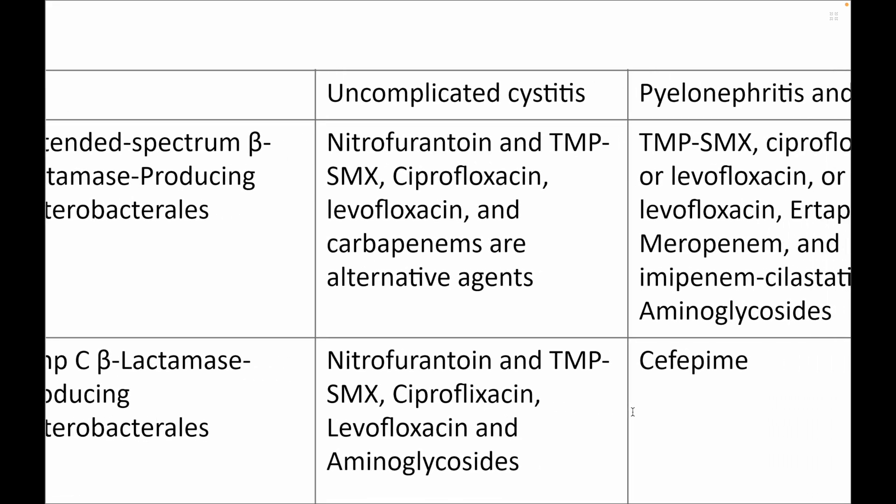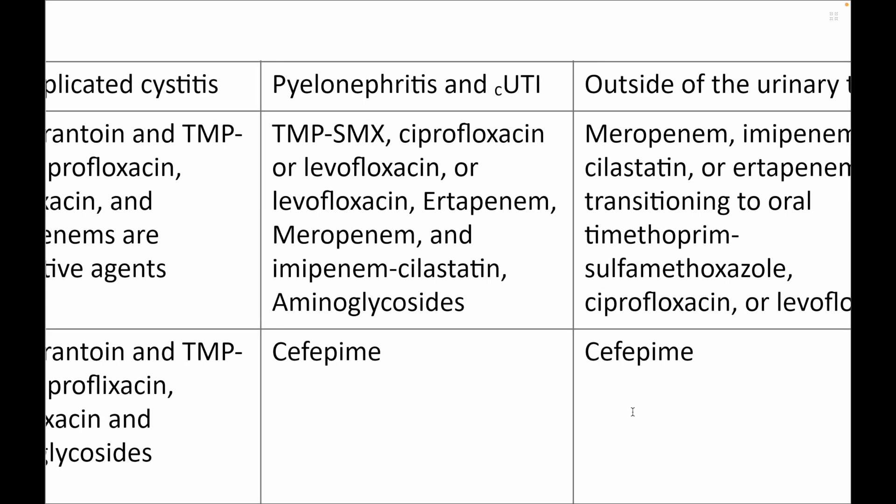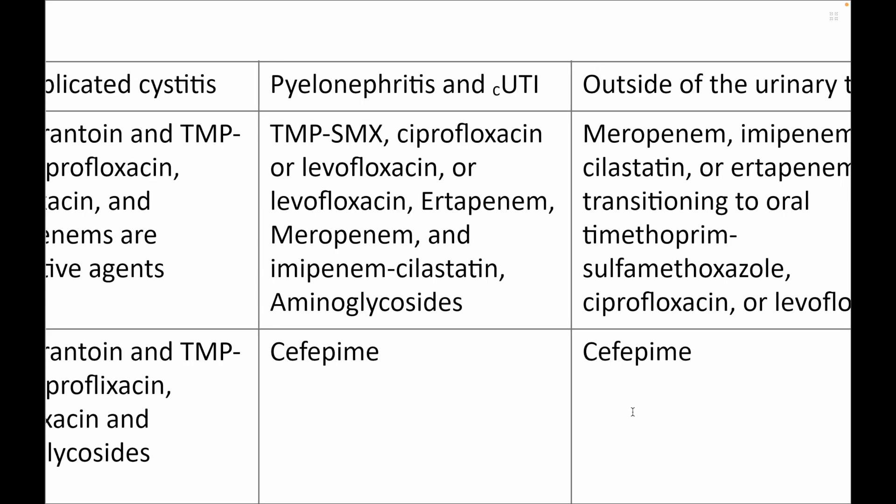For ESBL, in uncomplicated cystitis, you start with nitrofurantoin or trimethoprim-sulfamethoxazole. Apart from that, you can give ciprofloxacin, levofloxacin, or carbapenems. If it is more complicated — that is, pyelonephritis or a complicated UTI — then you can use trimethoprim-sulfamethoxazole or fluoroquinolones.